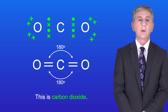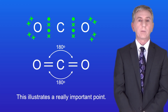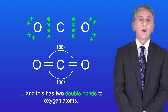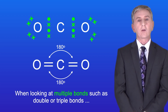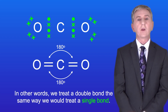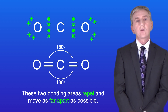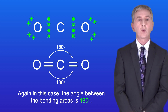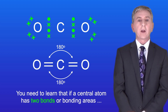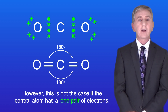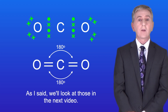Here's another linear molecule: carbon dioxide. This illustrates an important point — the central carbon atom has two double bonds to oxygen atoms. When looking at multiple bonds such as double or triple bonds, we treat a multiple bond as a single bonding area, so a double bond is treated the same way as a single bond. These two bonding areas repel and move as far apart as possible, giving a bond angle of 180 degrees. So if a central atom has two bonds or bonding areas, it will have a linear shape with a 180 degree bond angle — unless the central atom has a lone pair, which we cover in the next video.